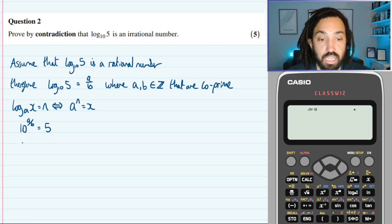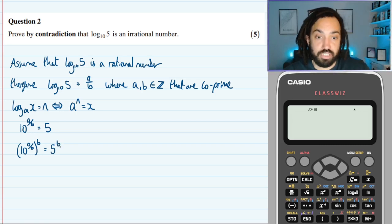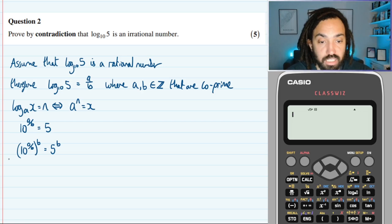Okay, so what that means is that I can write that as 10 to the power of a over b, to the power of b, is equal to 5 to the b. So I could take both sides and raise to the power of b. Now the reason why I'm doing that is because I want to split up this indice here, which is a over b, so that the b is going to move to the other side. So that means I'm going to have 10 to the a is equal to 5 to the b.